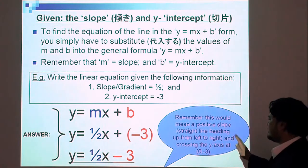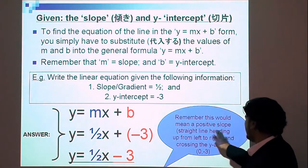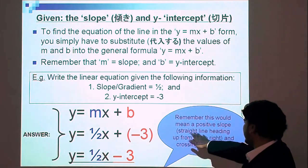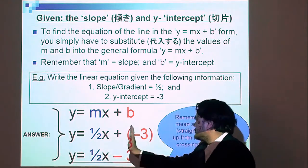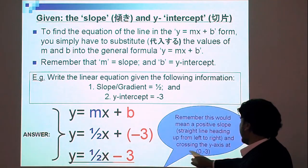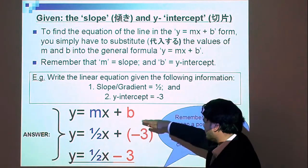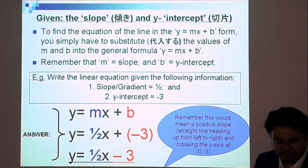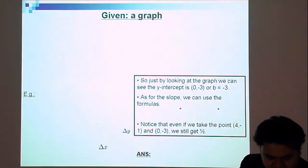Again, from our first lesson on linear equations: what would this mean? This would mean a positive slope — one-half — so the graph will be going upwards, and it will cross the y-axis at negative 3, that is the point (0, negative 3).